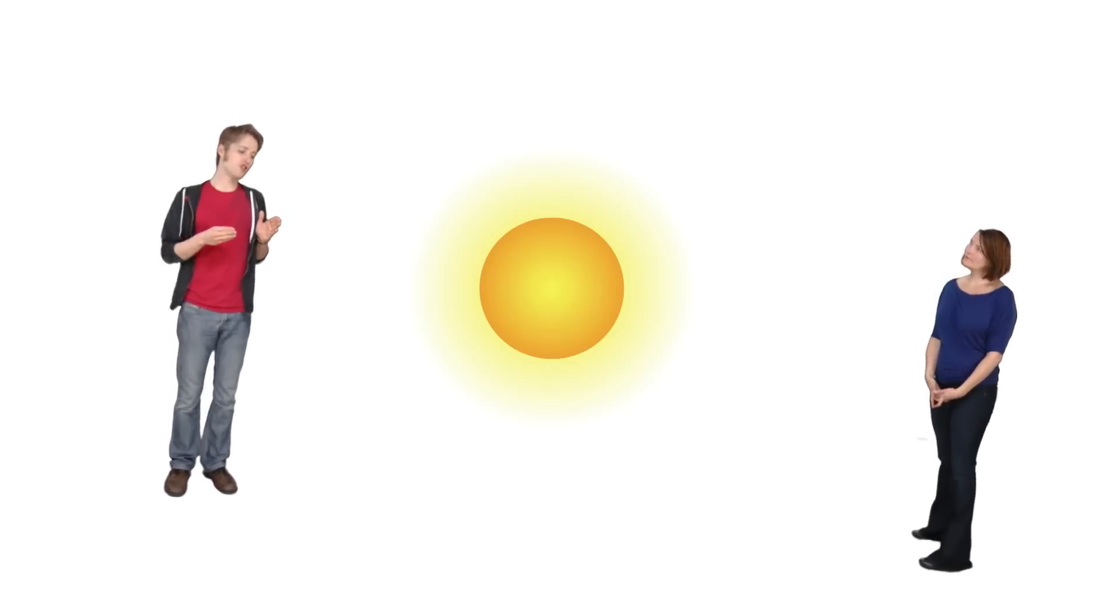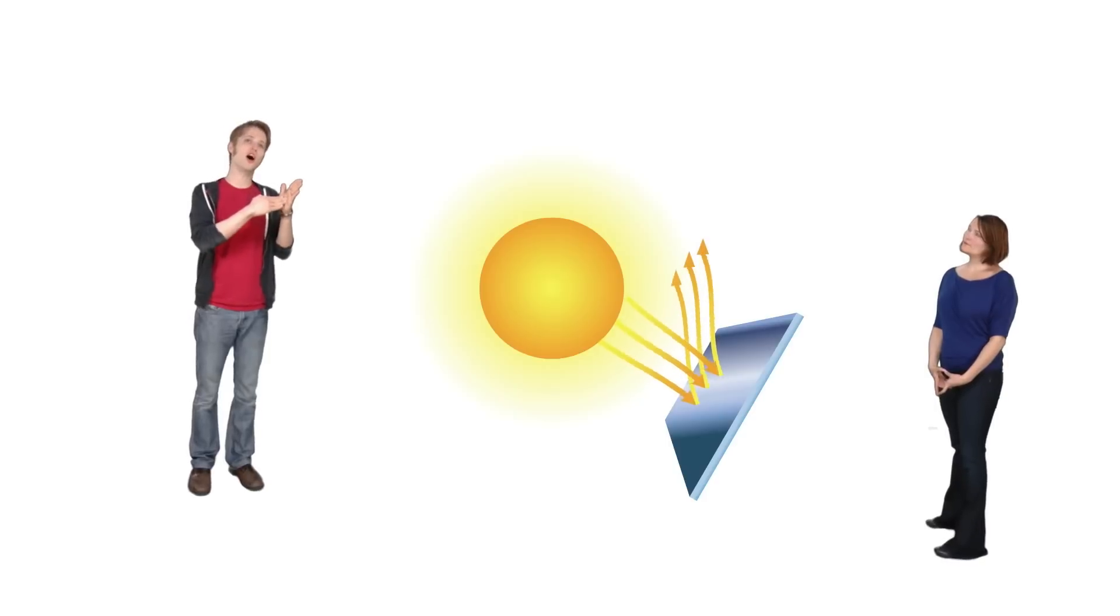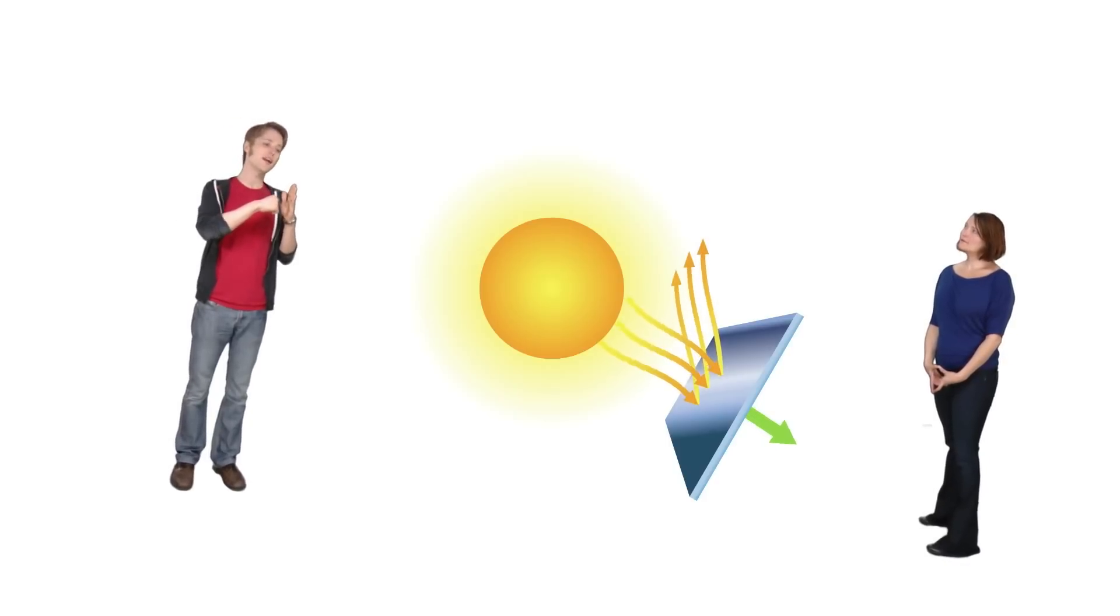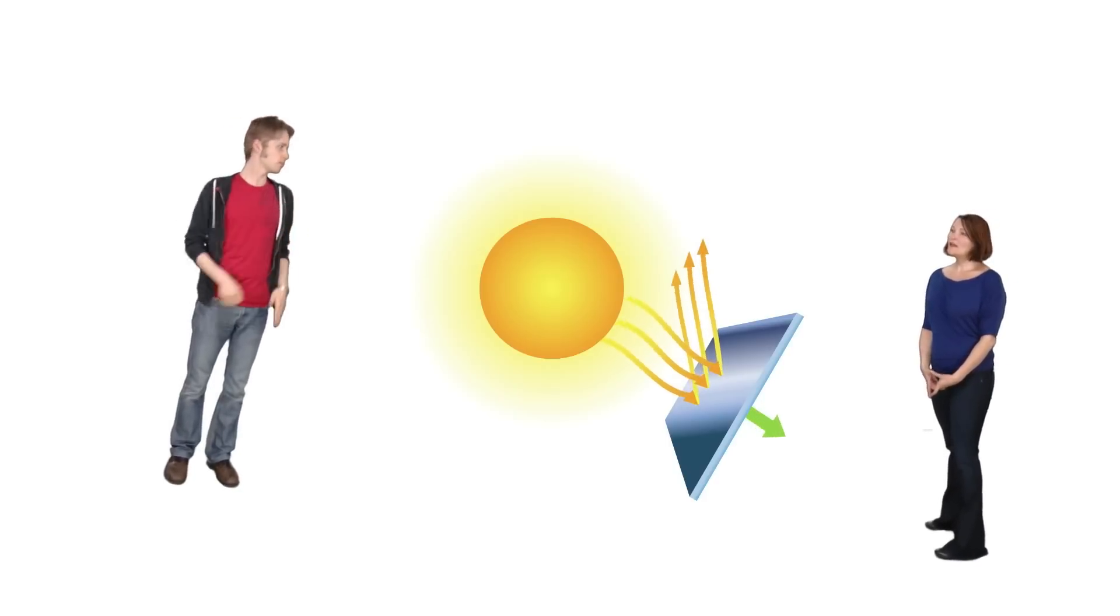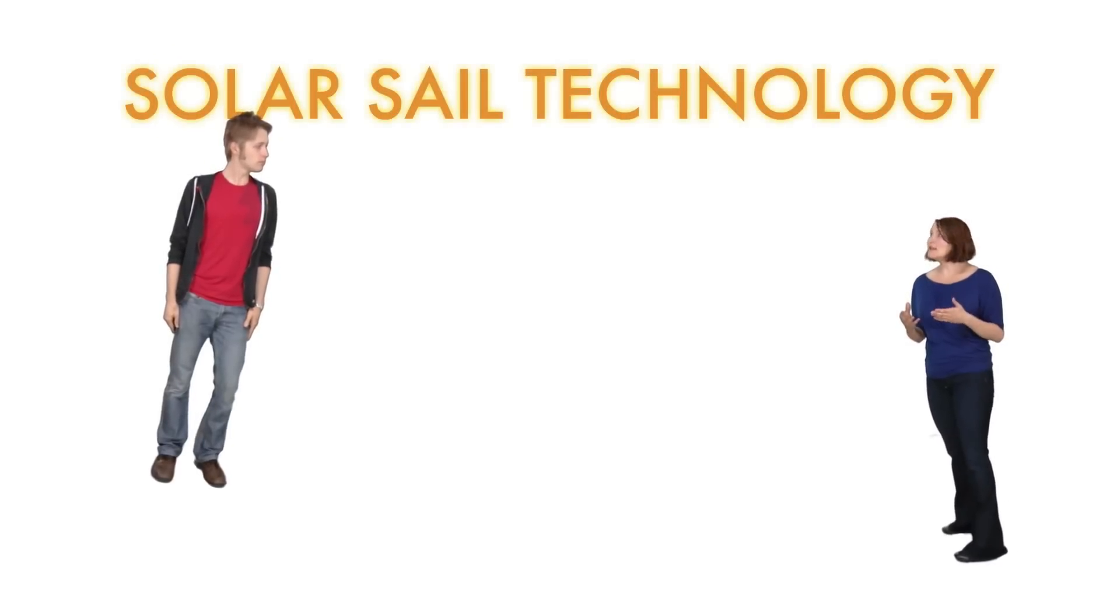Sunlight is made up of photons. So when sunlight hits a reflective surface, it bounces those photons off and actually exerts a force not unlike the wind behind a sail. That's right, and this is called solar sail technology, and the idea is that we could use this to propel spacecraft.